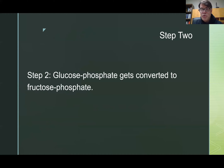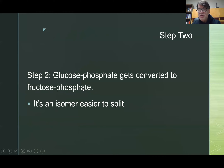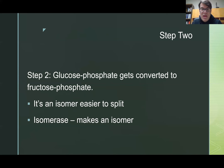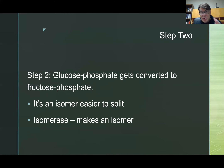Step two: glucose phosphate to fructose phosphate. Same chemical formula — these are two different isomers, still in a ring structure. The fructose phosphate is easier to split. We're slowly rearranging things, getting ready for the hi-yah. An isomerase is an enzyme that makes an isomer — it reshuffles the Rubik's cube to change glucose phosphate into fructose phosphate. Same chemical formula, two different arrangements. That's stage two.